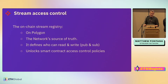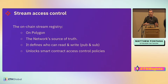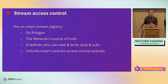On to the access control. The on-chain stream registry is on Polygon — this is the network source of truth. It defines who can do what on the network: on these streams you can typically publish or subscribe, and the network looks to this registry to determine who can do what. It also unlocks some interesting smart contract access control policies. If you're familiar with the Lit Protocol, it's quite similar. We rolled our own permissioning system for the network, but perhaps it could be composable with Lit as well — maybe that gets answered in the hackathon this weekend.